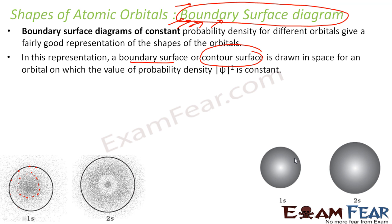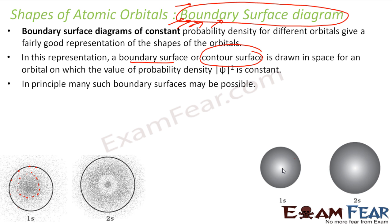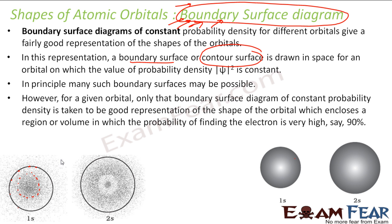The same darkness indicates the same probability density — the probability of finding the electron is the same in that region. Lighter color means less probability. In principle, there are many possible boundary surfaces. If you combine them, you get this kind of shape.